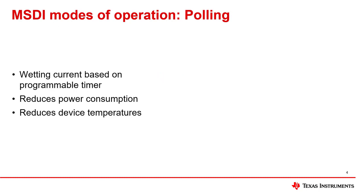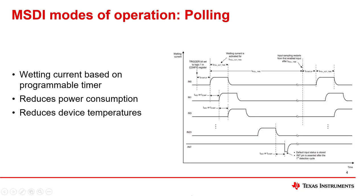Polling mode reduces the power consumption and device temperature by periodically applying the wetting current based on a programmable timer, only when sampling the input channel and disabling the wetting current otherwise. This graph is an example of the polling sequence in standard polling time. When activated, wetting current is applied to each input for a pre-programmed polling active time, and then the input voltage is sampled in sequential order and then disabled for a period of time to reduce overall system current consumption.